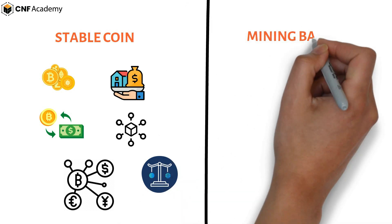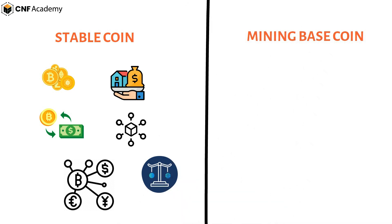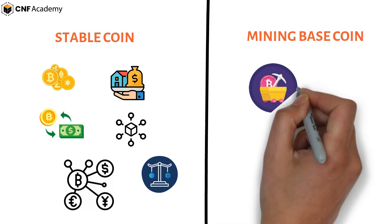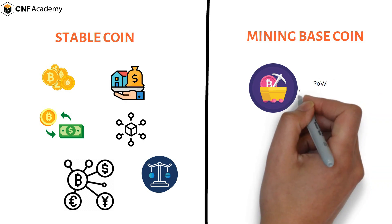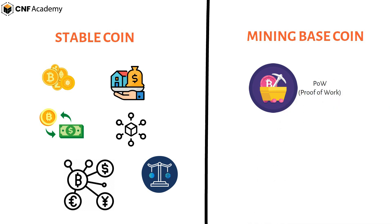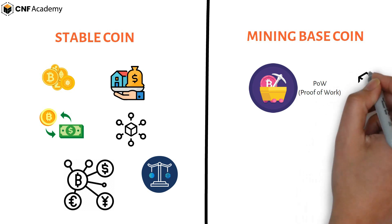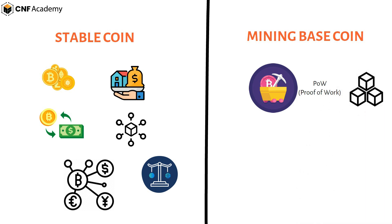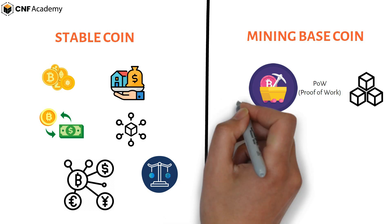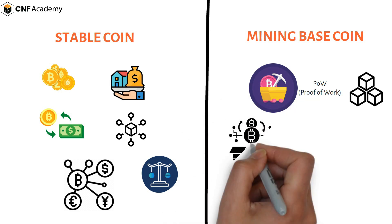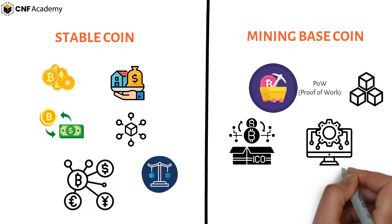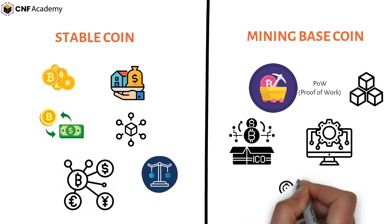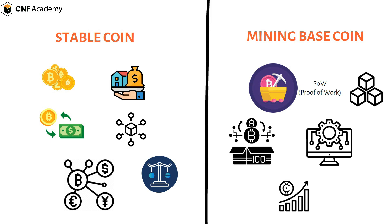Mining-based coins, as the name indicates, are mined into existence. Most mining-based altcoins use proof-of-work — a method by which systems generate new coins by solving difficult problems to create blocks. The alternative to mining-based altcoins is pre-mined coins, often part of an initial coin offering (ICO). Such coins are not produced through an algorithm but are distributed before they are listed on the cryptocurrency market.